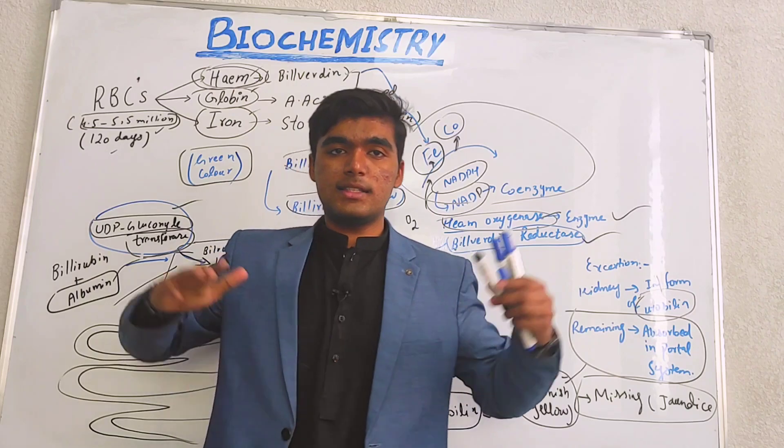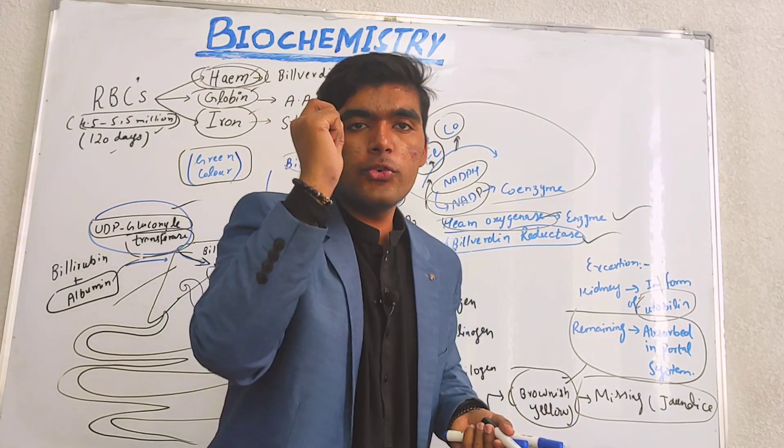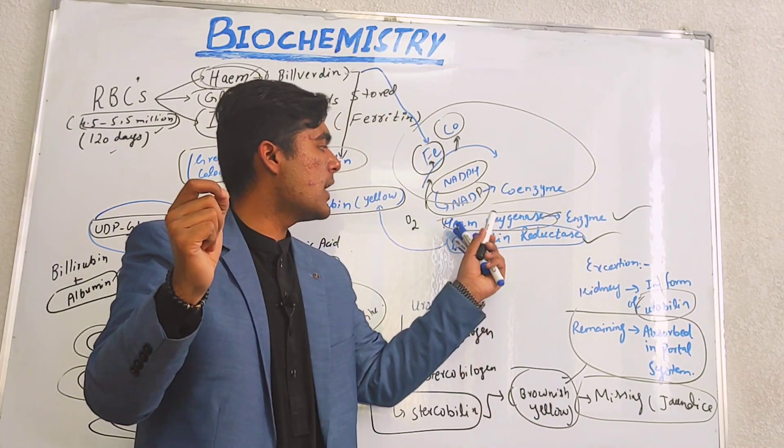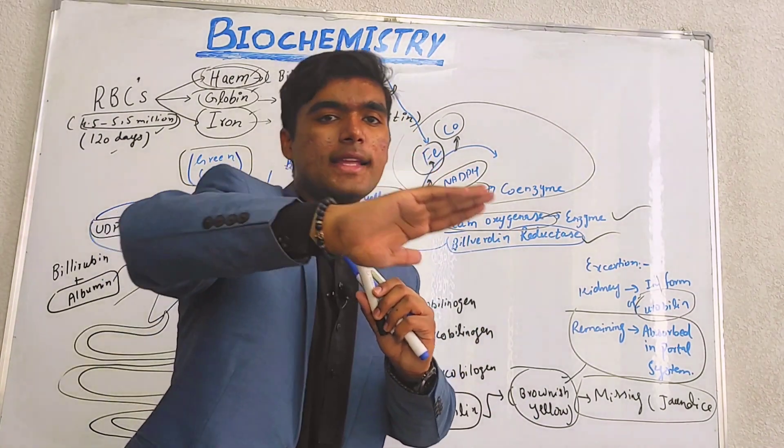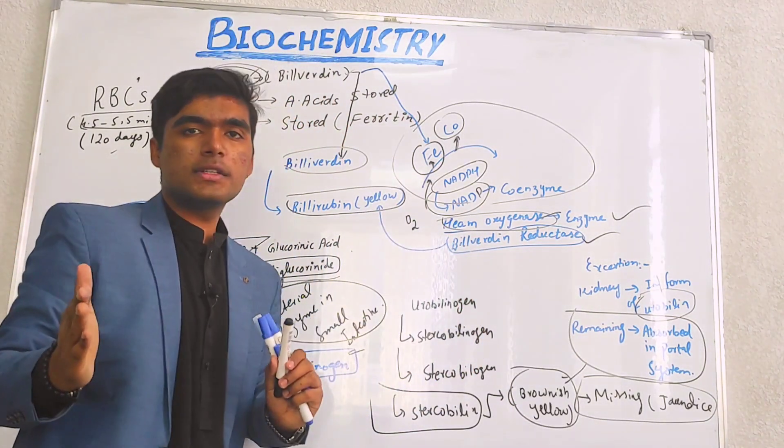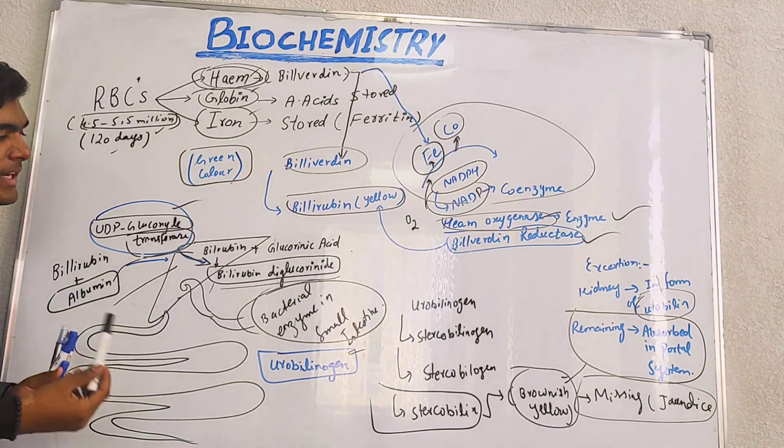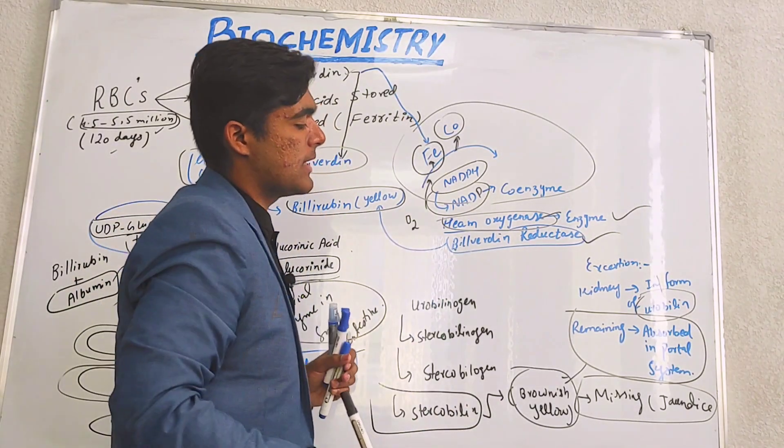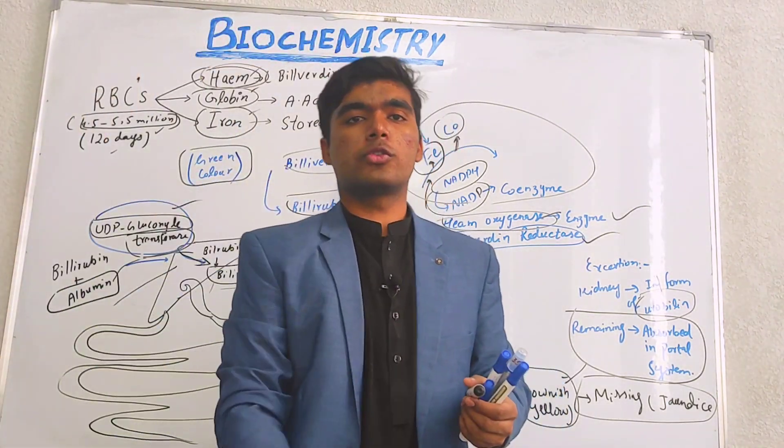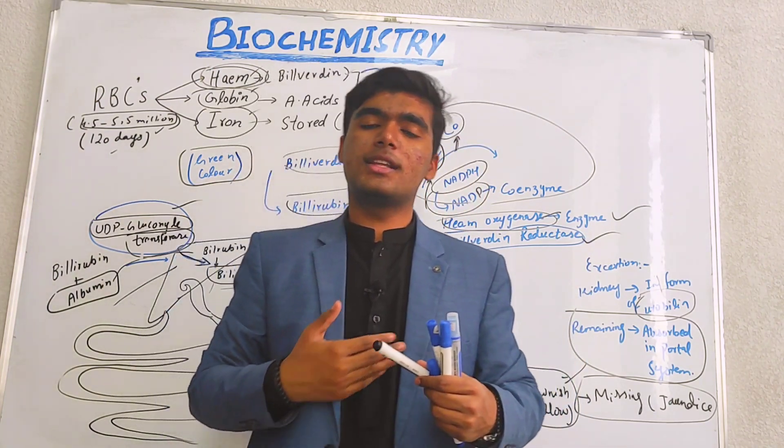This is our basic discussion on how bilirubin formation occurs: how first biliverdin is formed in the presence of heme oxygenase, then how biliverdin is converted into bilirubin with bilirubin reductase, and then in the liver what steps occur, in the small intestine what steps occur, in the large intestine what steps occur, and how the whole process is completed. Hope you all will understand it. Don't forget to subscribe to Medicos Lectures by Shujat. Thank you so much.